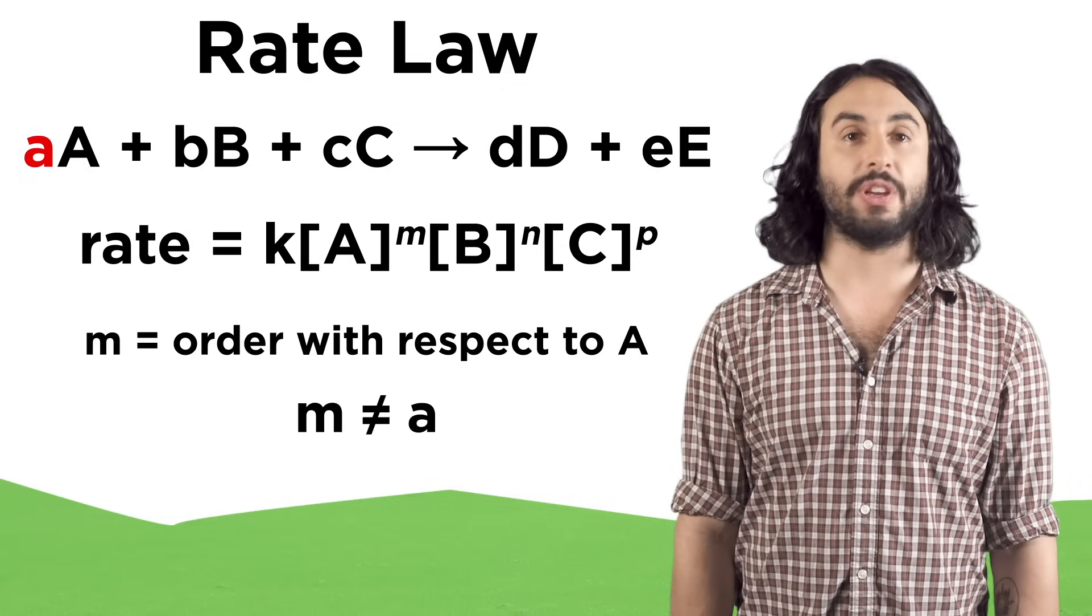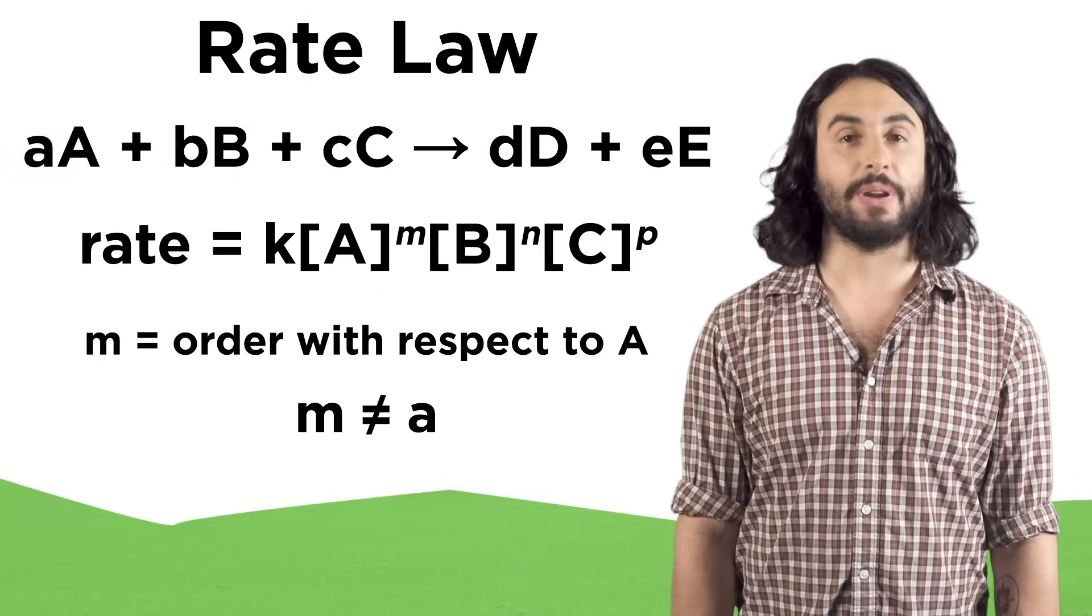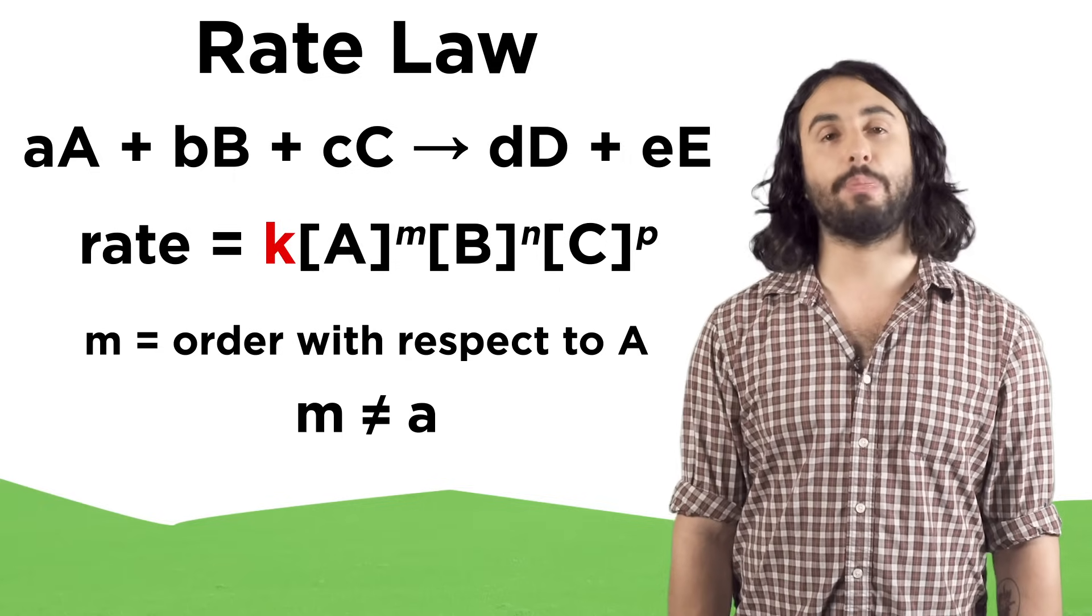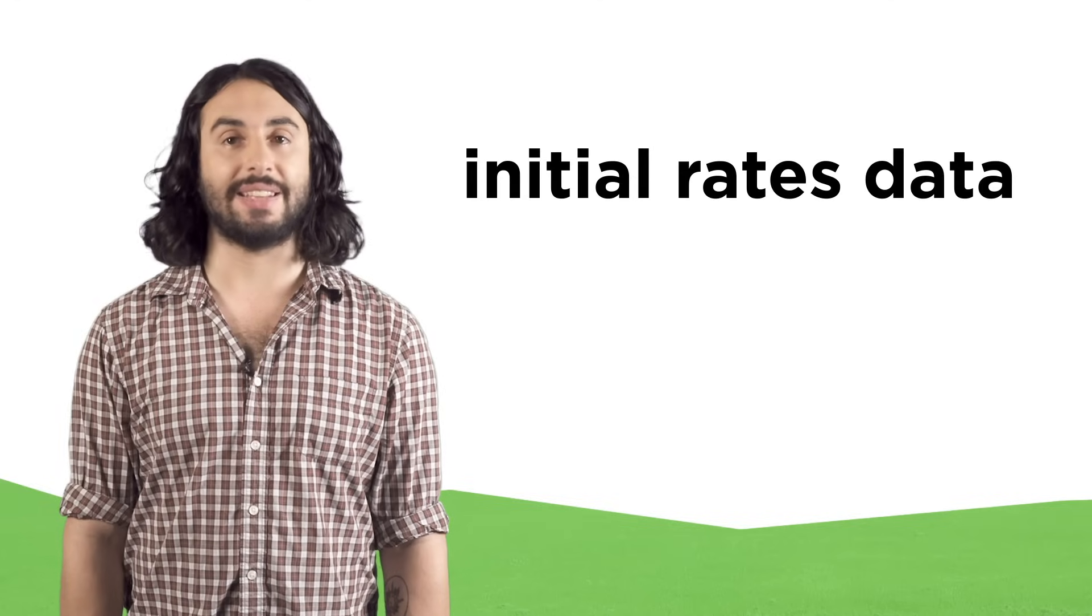These exponents are not related to the stoichiometric coefficient from the chemical equation and must be determined experimentally. There is also a rate constant k, which is a proportionality constant between rate and concentration. Now that we have the terminology down, how do we experimentally determine the order of a reaction with respect to each given reactant?